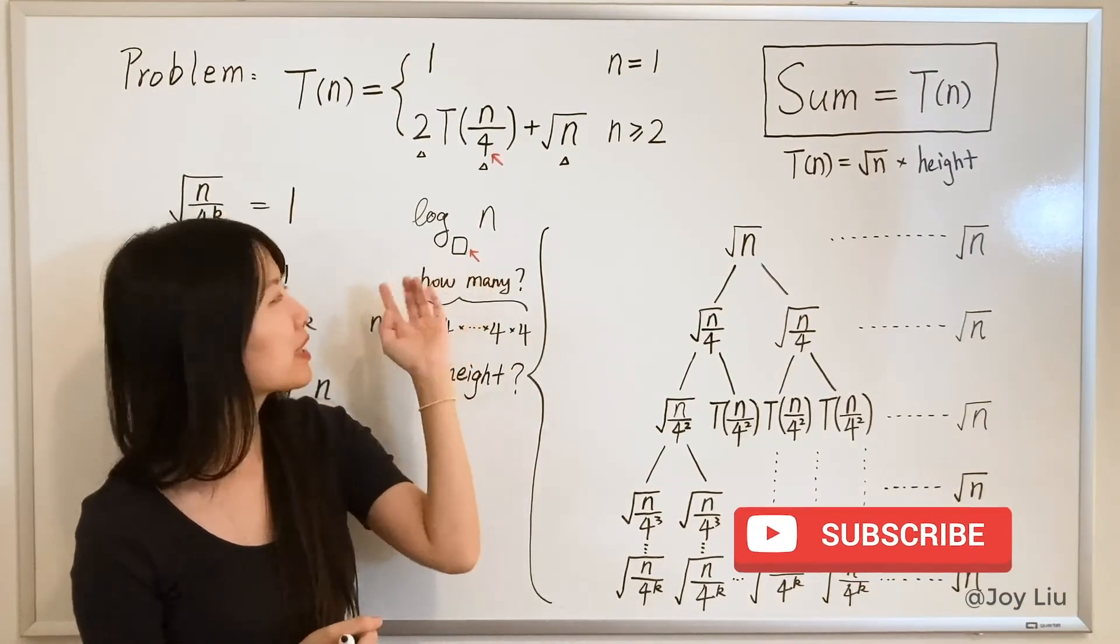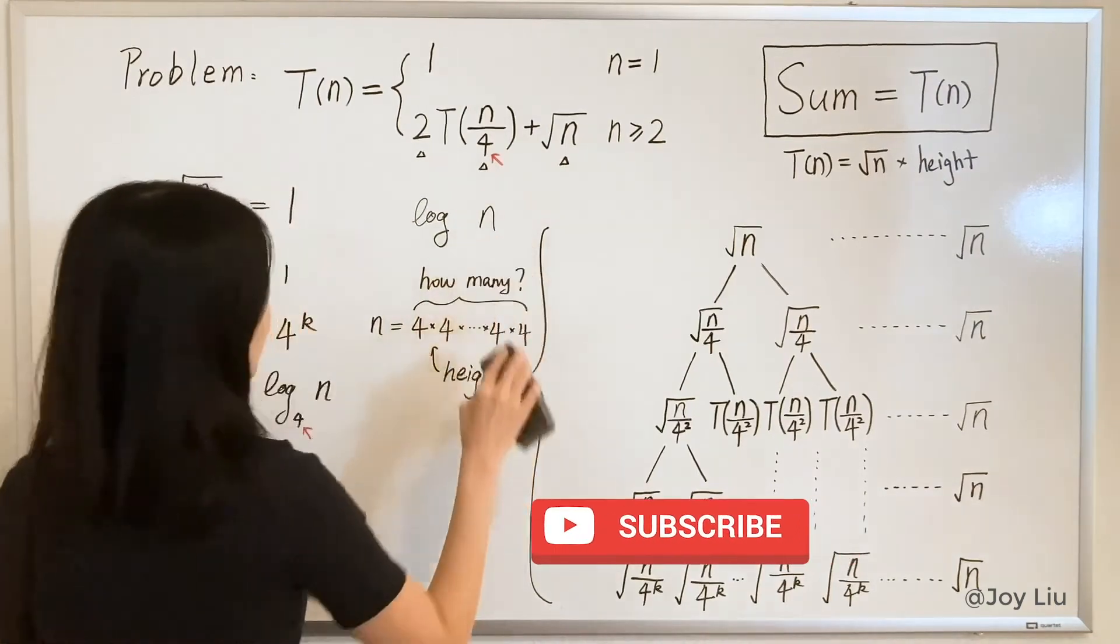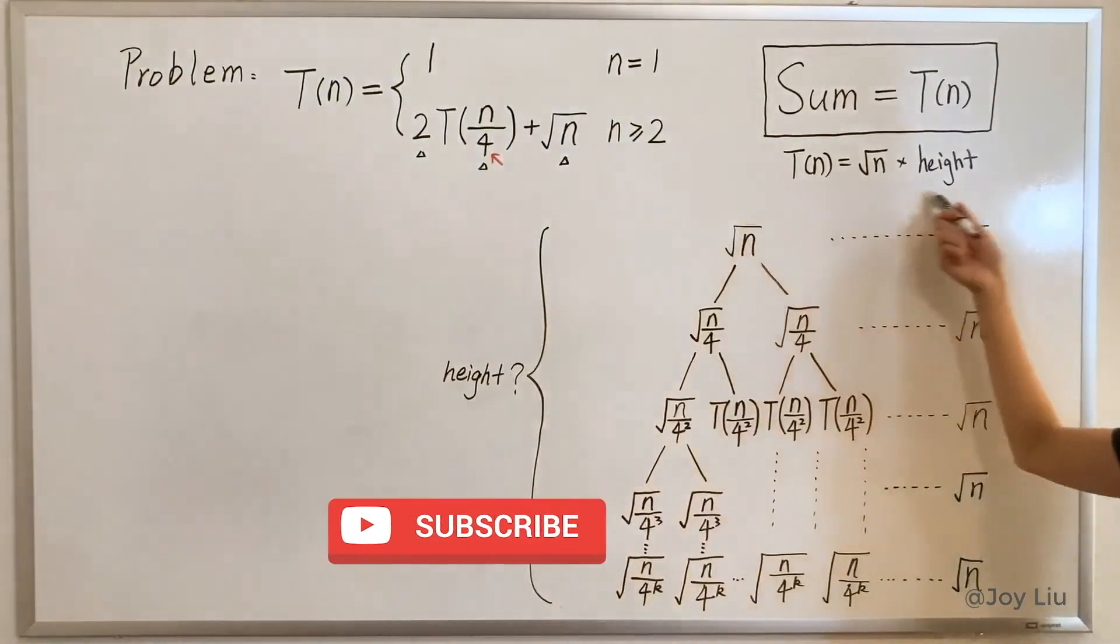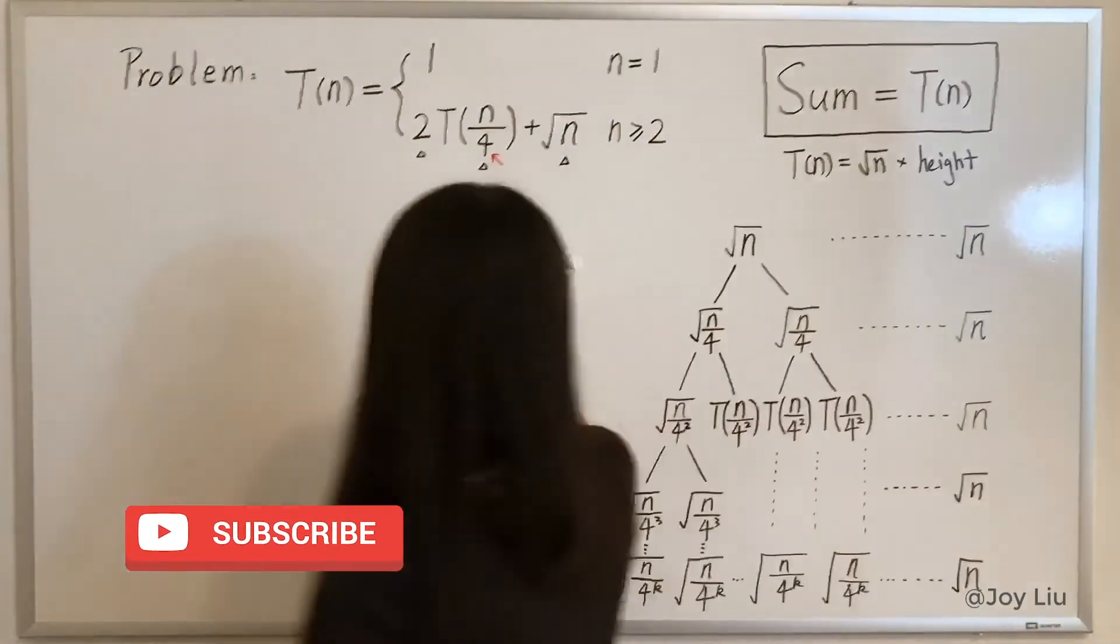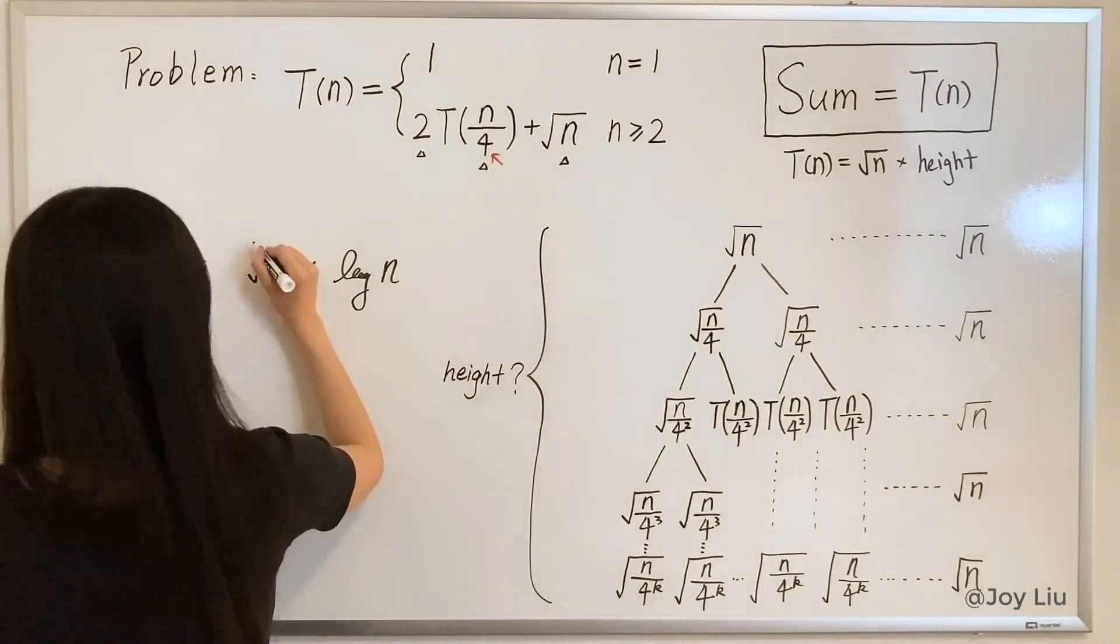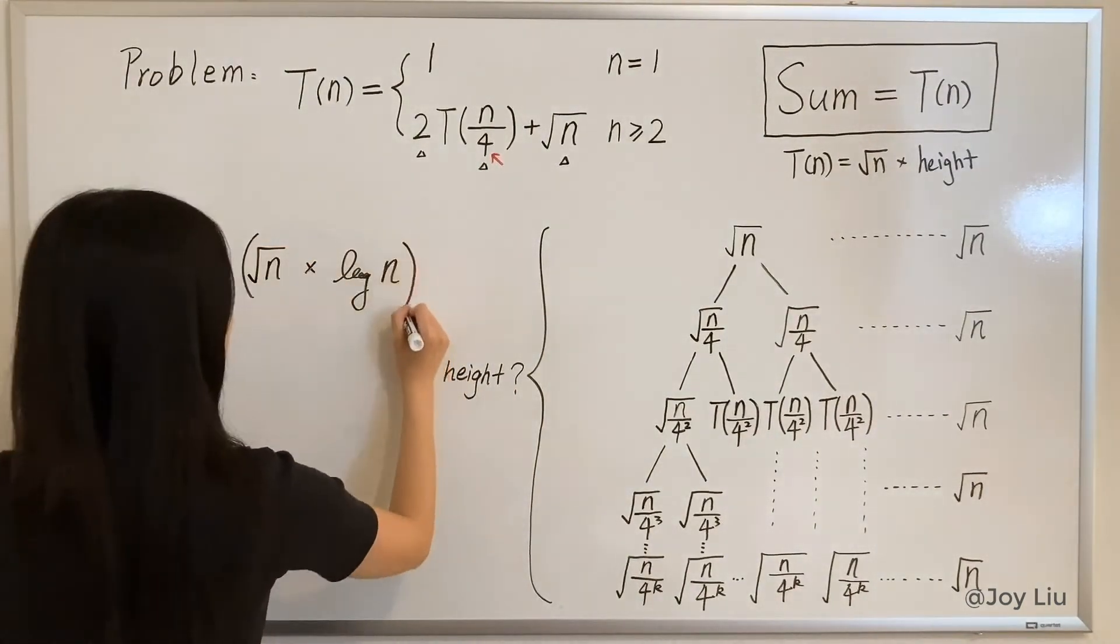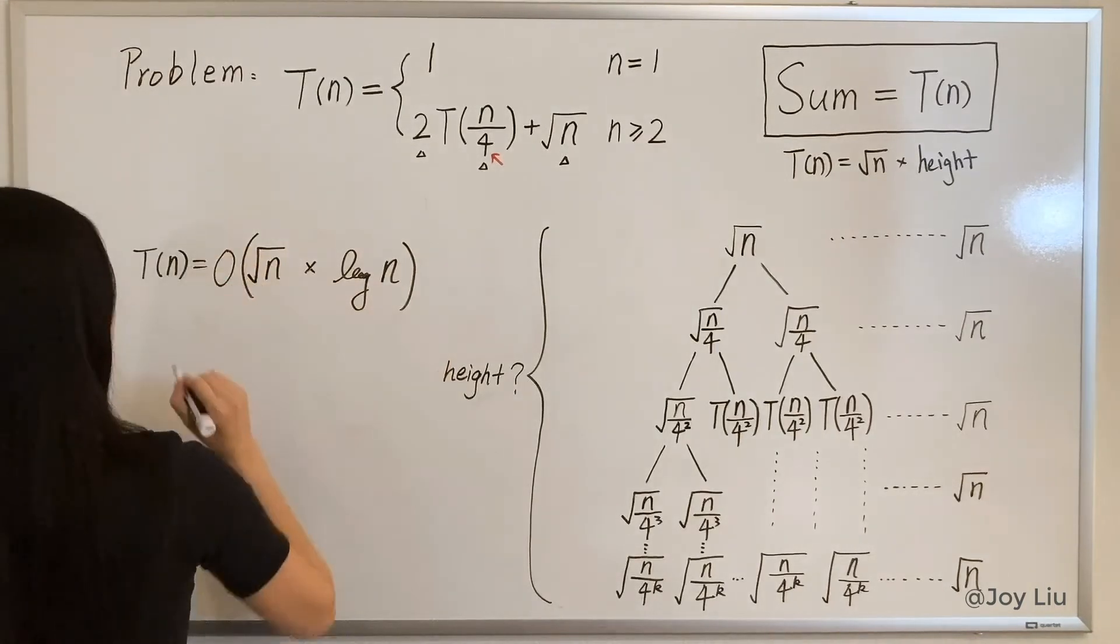So we don't really care what is the base, we just get rid of it. Got it? Okay, our final step is just to do the multiplication. And I don't put the base here, so I will need a big O notation. If you don't indicate the base here, nobody will judge you. It's going to be fine.